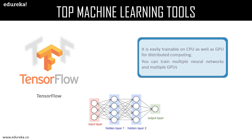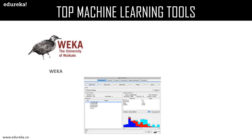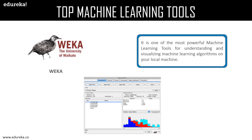Next is WEKA, the Waikato Environment for Knowledge Analysis. It is an open-source Java software that has a collection of machine learning algorithms for data mining and data exploration tasks. It is one of the most powerful machine learning tools for understanding and visualizing machine learning algorithms on your local machine. It has both a graphical interface and a command-line interface. The only downside is that there is not much documentation or online support available, but overall it's very good software. It also provides predictive modeling, visualization, an environment for comparing learning algorithms, and the graphical user interface includes data visualization as well.